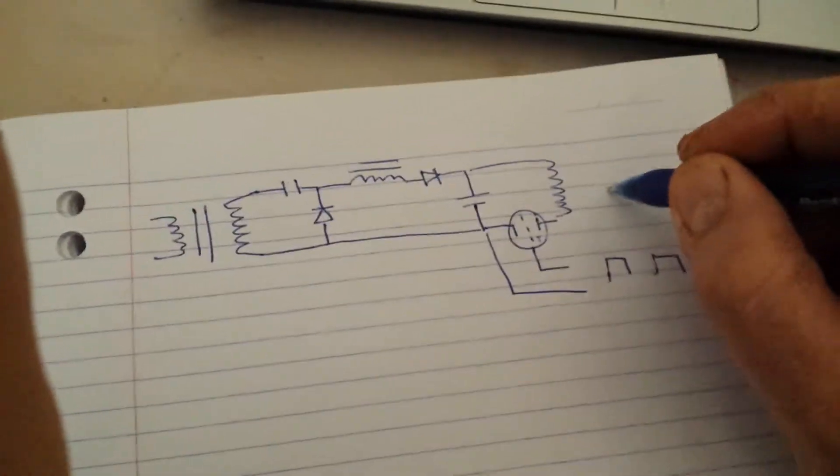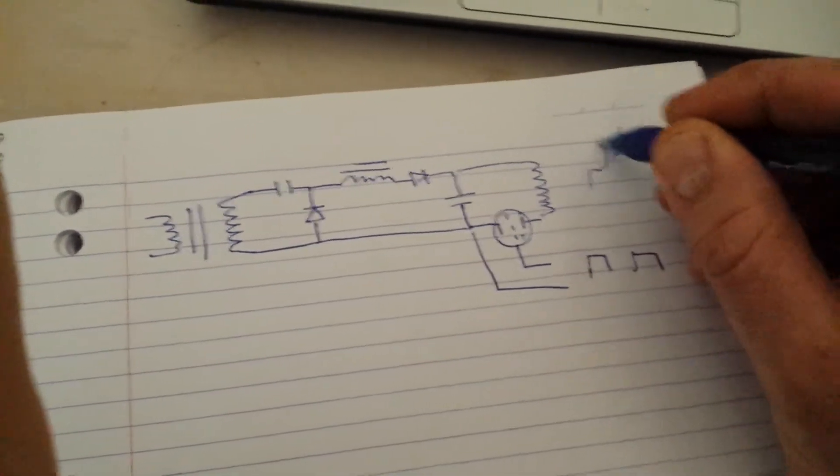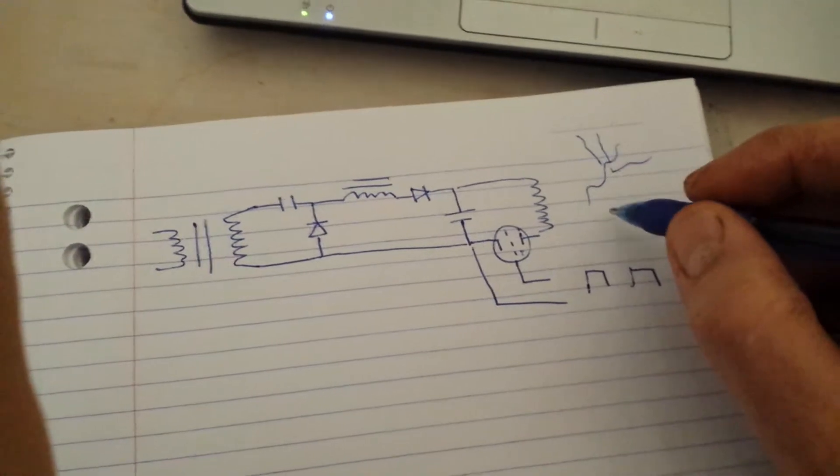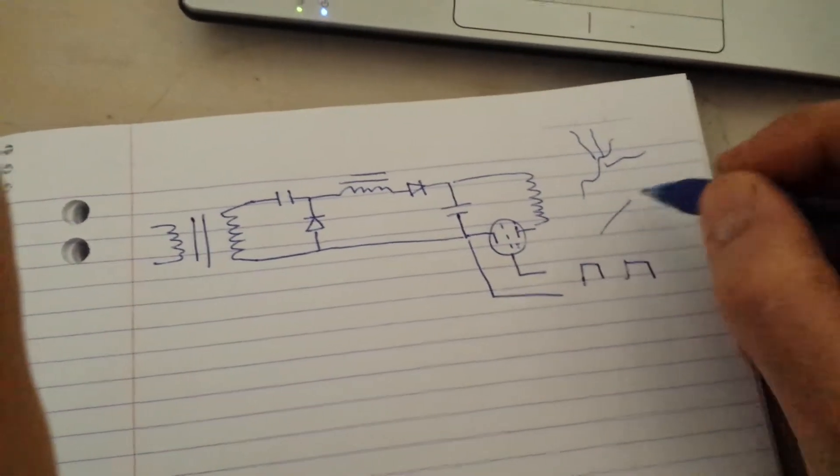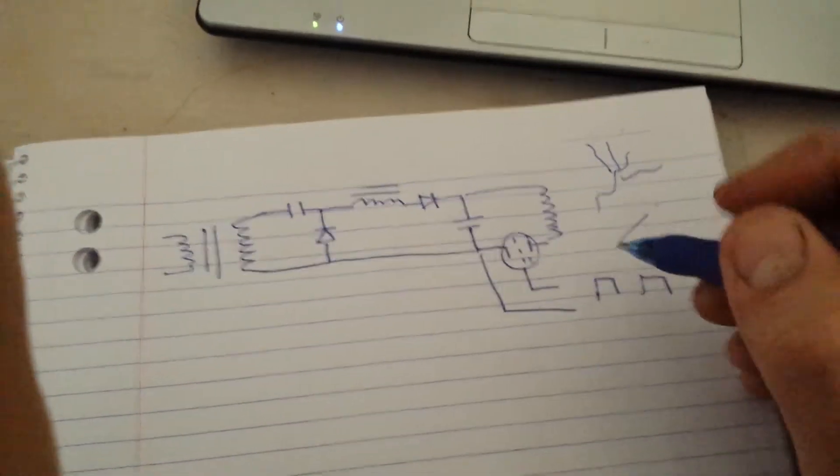And you get a very poor spike output. Instead of getting, like, a streamer with multiple streams to it, which is a radio frequency output, you just get little sparks, like, from an ignition coil.